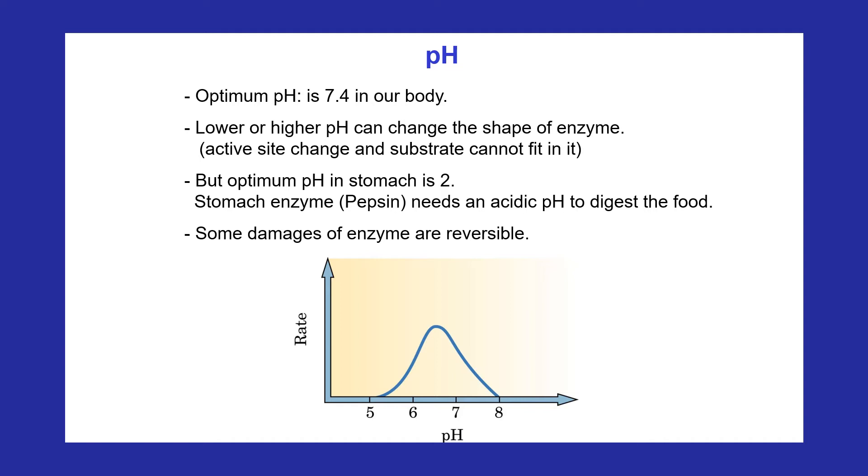Enzymes in most cells have optimum pH values at physiological pH values, which is around 7.4. However, enzymes in the stomach have a low optimum pH because they hydrolyze proteins at the acidic pH in the stomach.